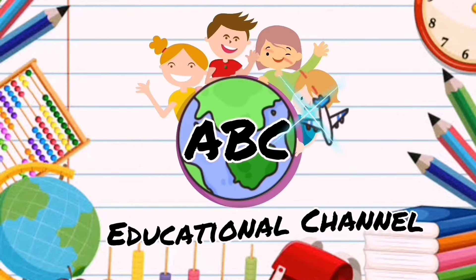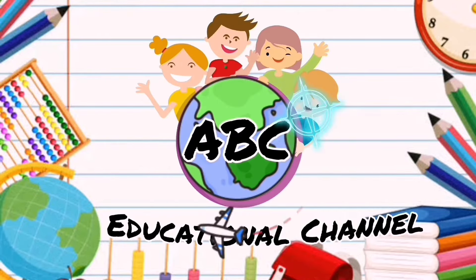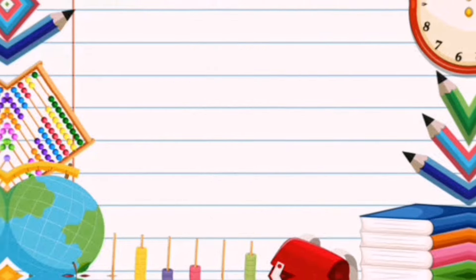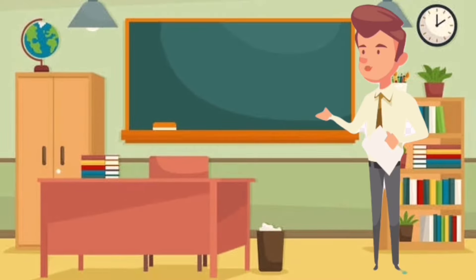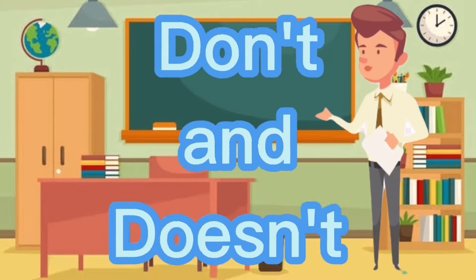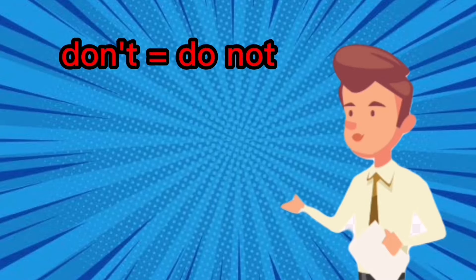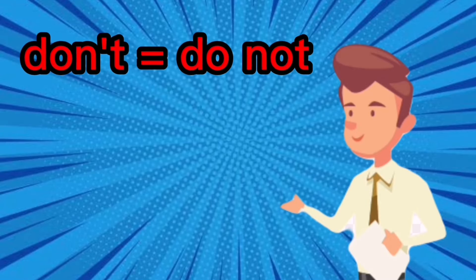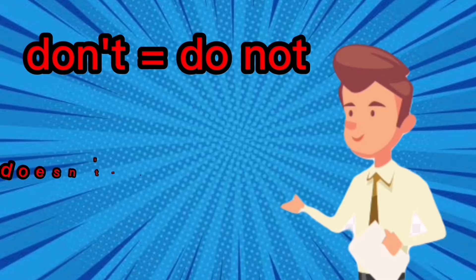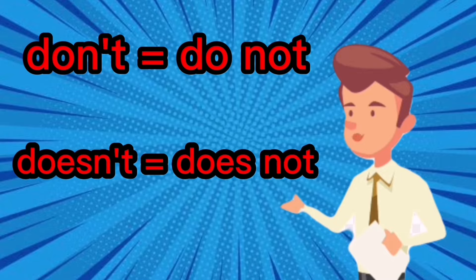ABC Educational Channel. Today we are going to learn about 'don't' and 'doesn't'. Don't is a contraction of 'do not', while doesn't is a contraction of 'does not'.